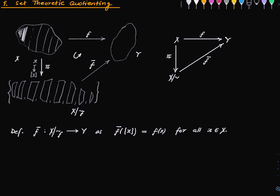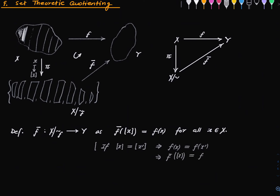For well-definedness: suppose x and x′ have the same equivalence class. We want to show that f(x) = f(x′). But what does it mean for x and x′ to have the same equivalence class? It means x and x′ are in the same fiber, which exactly means they have the same image. So f(x) = f(x′), and hence f-bar is well-defined.